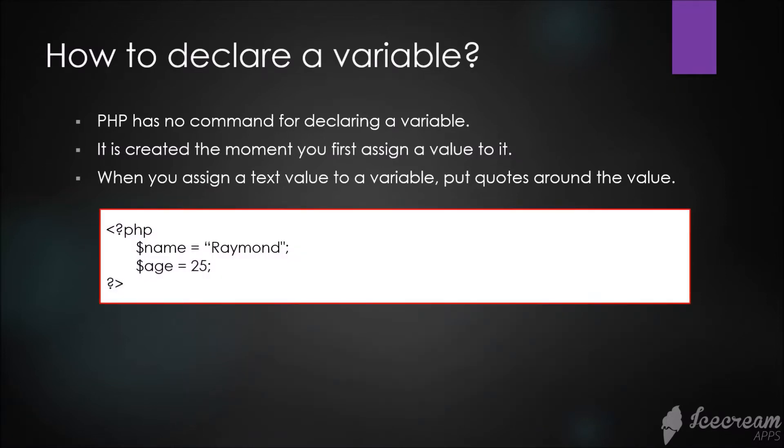We have here an example where we declare a name variable equal to the string 'Raymond', then the variable age has a value of 25. That's how we define or declare a variable in PHP.